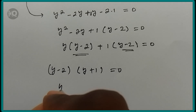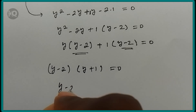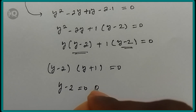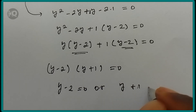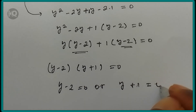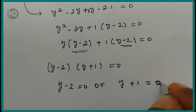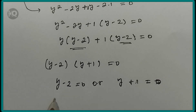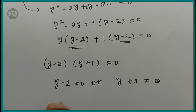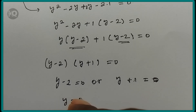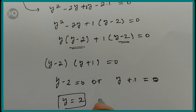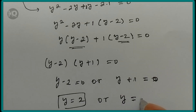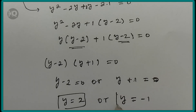We now have two possibilities. The first is y minus 2 equals 0, giving y equals 2; or y plus 1 equals 0, giving y equals minus 1.